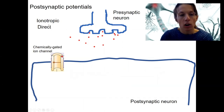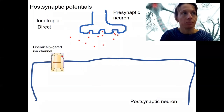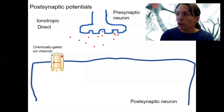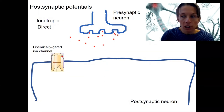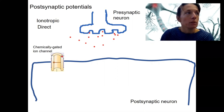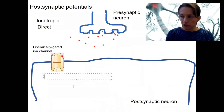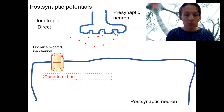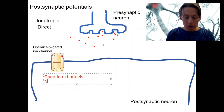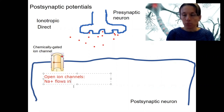We're going to focus right now only on ionotropic receptors — the direct effect — just to simplify things. We've got this chemically-gated ion channel, and it is going to open in response to this stimulus. Let's write down the specifics. We're going to open ion channels. What type of channels? We can have sodium. Sodium will flow in, down its electrochemical gradient.